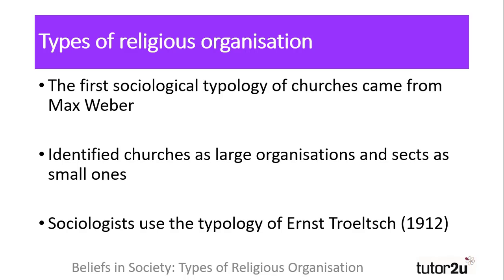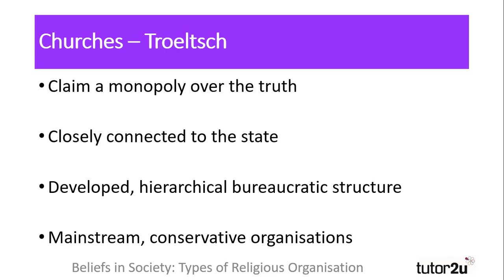Nowadays, sociologists use the typology of Ernst Troeltsch, which was more comprehensive in its analysis of churches and sects. Troeltsch defines churches based upon a number of characteristics, not merely the size of the congregation, as Weber did.